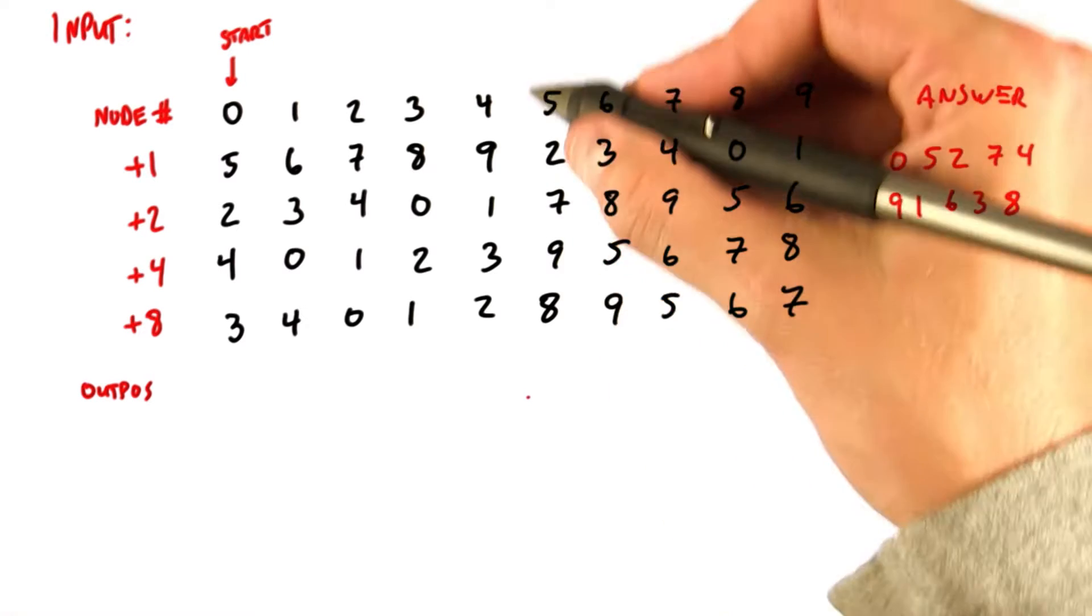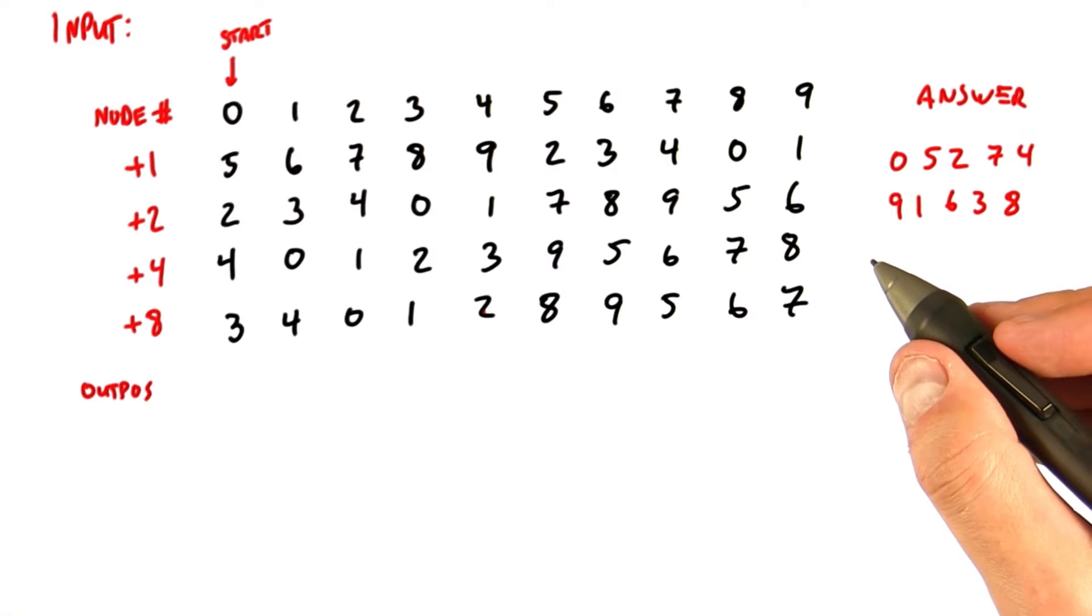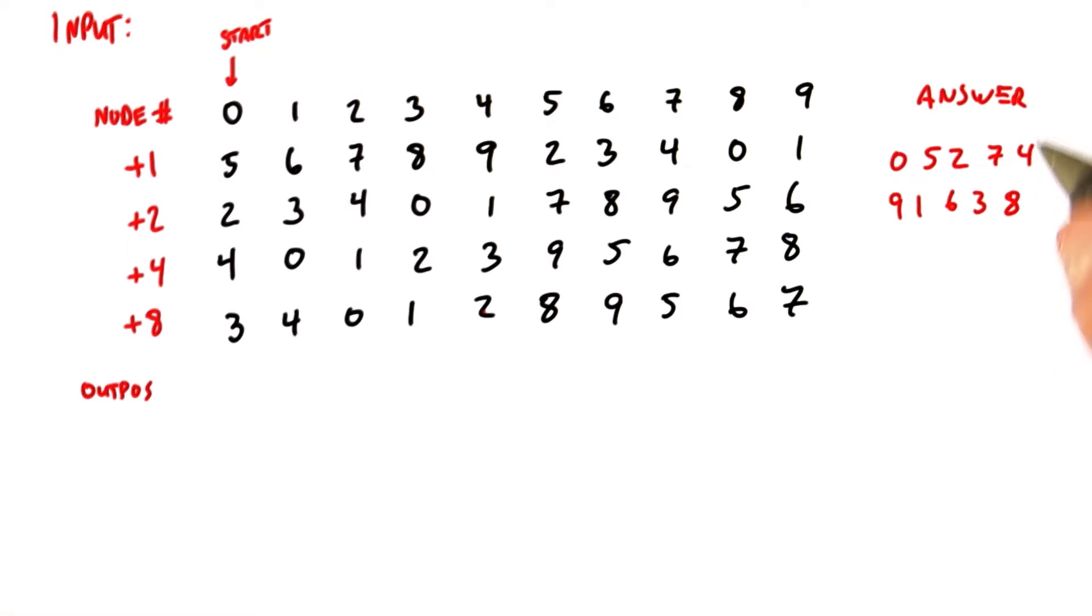Now, the second phase of this algorithm uses this table to construct the output order. What we're looking to generate is the list of nodes in order, and we computed this before.